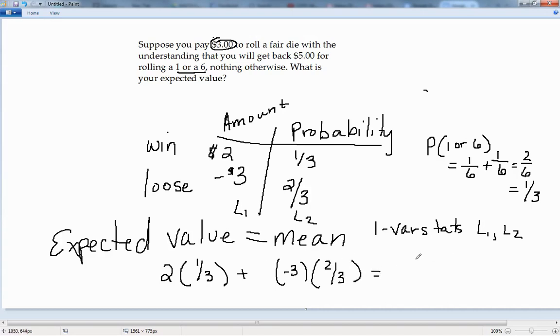So this would give us 2 times 1 third is 2 thirds. And then we'd have minus 6 thirds, where the 3's cancel, it's like 3 over 1. So minus 2, which is 6 thirds, so we'd have minus 4 thirds.